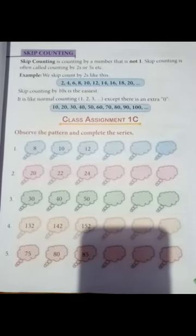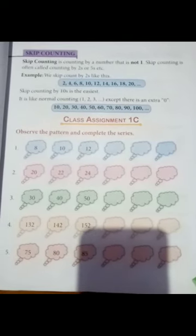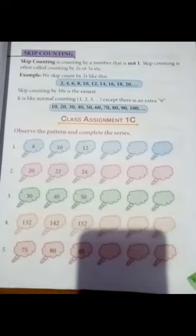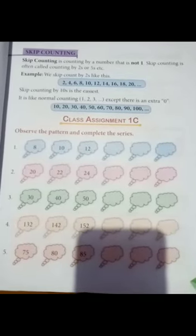4 plus 2 is 6, 6 plus 2 is 8, 8 plus 2 is 10, 10 plus 2 is 12. This is our skip counting by 2. The series is complete. We will see the same way in the next one.